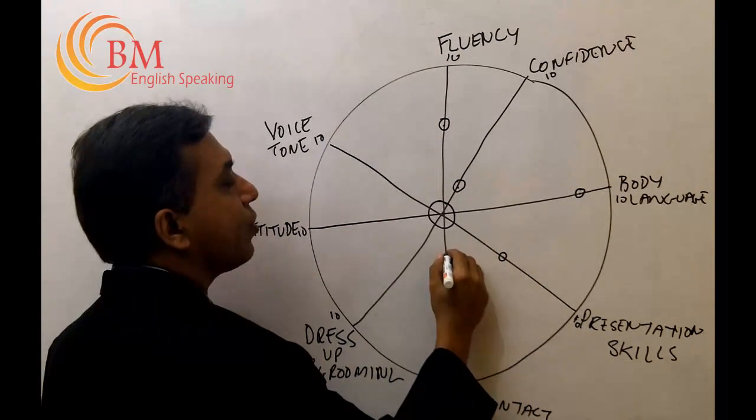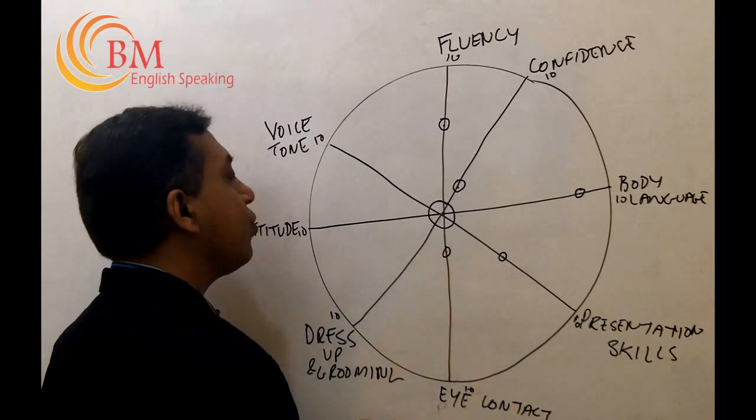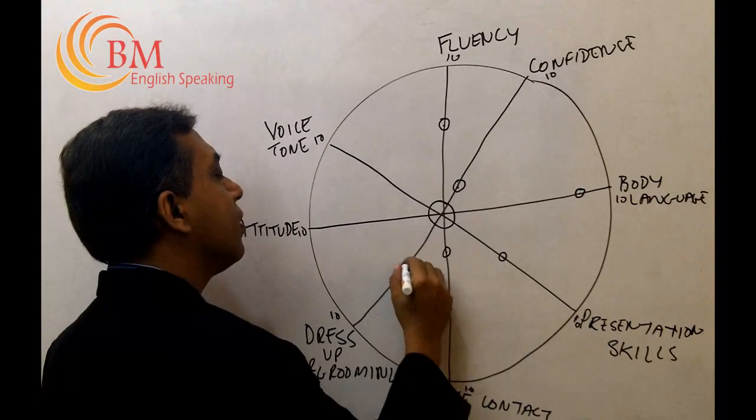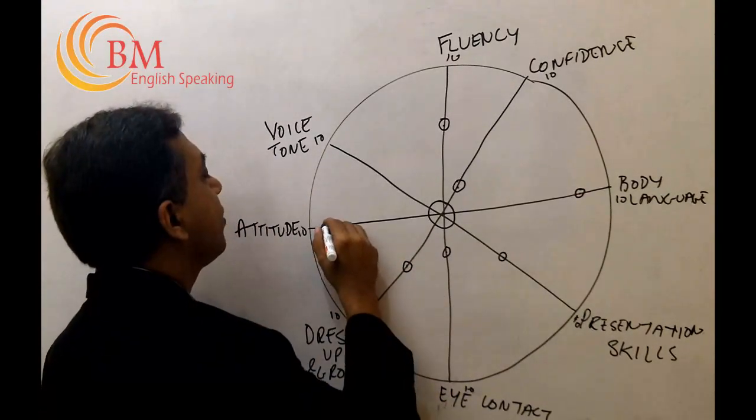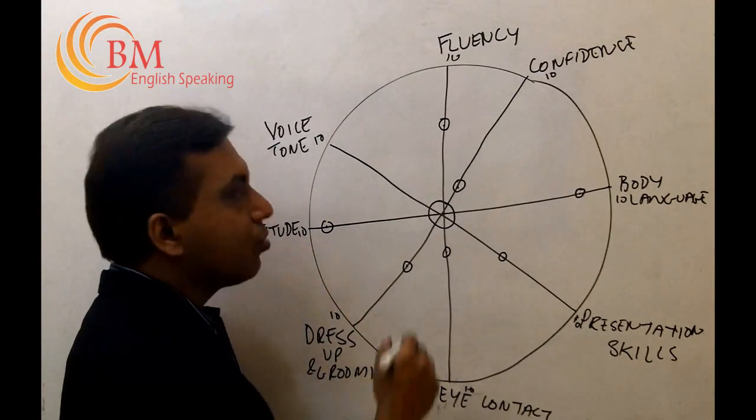Let's say your eye contact you rate it at two. Let's say your dressing and grooming you rate at four. Let's say your attitude you rate at eight. Let's say your voice tone you rate at five.